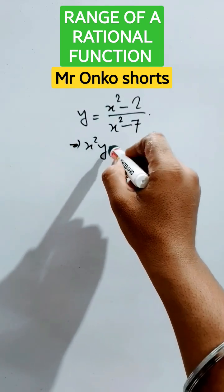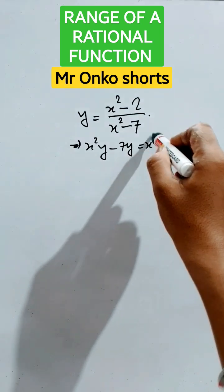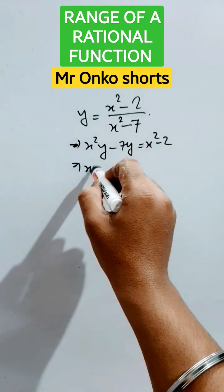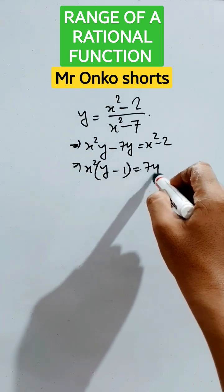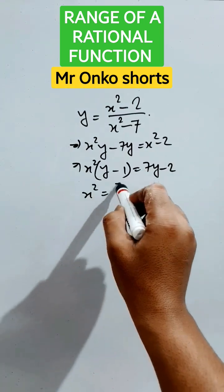First, cross multiply. This gives x²y - 7y = x² - 2. Now take x² common: x²(y - 1) = 7y - 2, so x² = (7y - 2)/(y - 1).